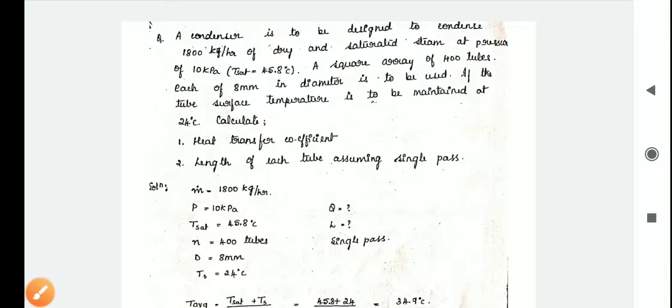This is the sixth problem of the condensation unit. A condenser is to be designed to condense 1800 kg per hour of dry and saturated steam at a pressure of 10 kPa, that is at T sat equals 45.8 degrees Celsius. A square array of 400 tubes, each of 8mm diameter, is to be used.